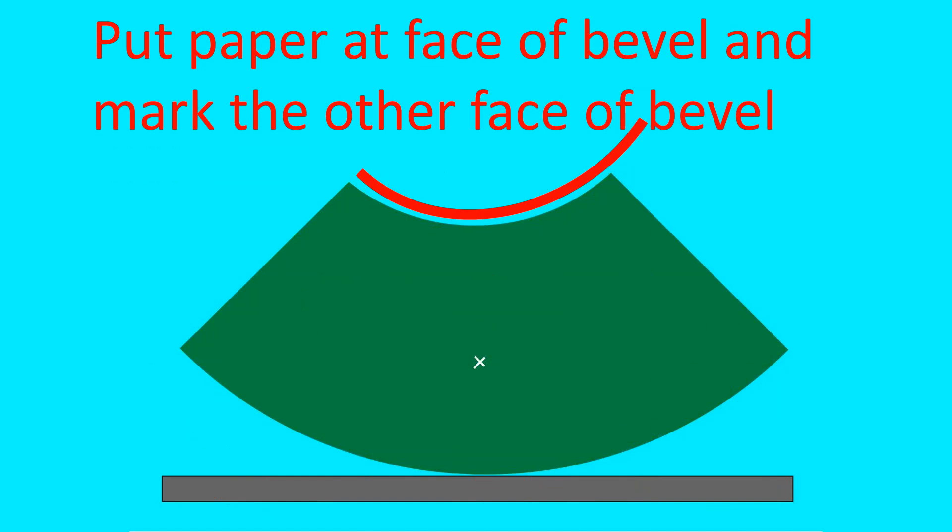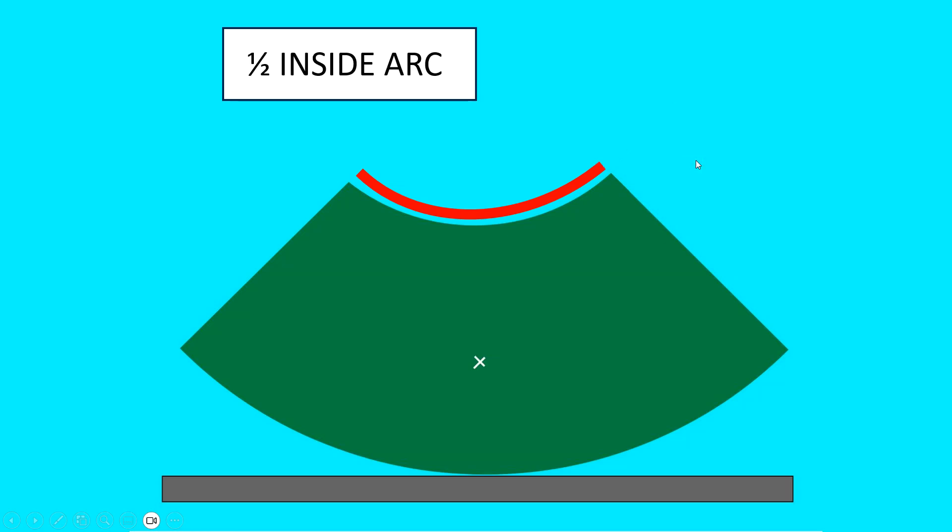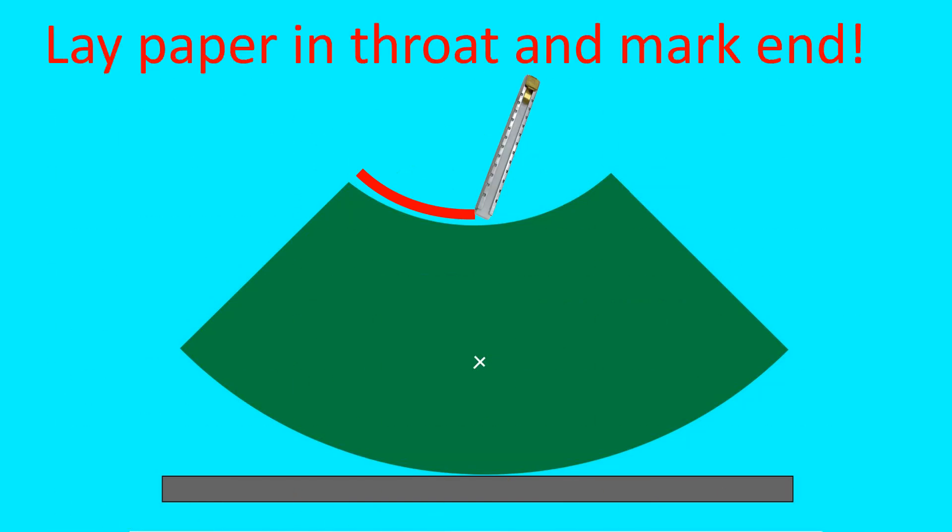We're going to cut a piece longer than the inside arc. We're going to put the paper at the face of the bevel and mark the other face of the bevel. Should have one perpendicular corner on the paper. Square it off. Here's your adding machine paper with the inside arc. I would cut off the excess. Cut it square. Then you're going to fold that paper. Fold it in half. So when you fold that paper, that represents half of the inside arc. Fold the paper in half. Lay the paper in the throat and mark the end. No math.